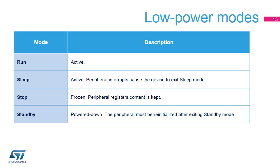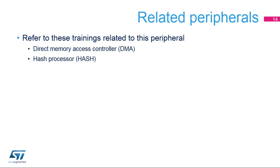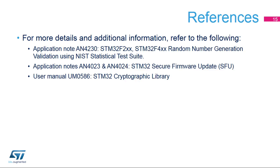Here is an overview of the status of the cryptographic processor in each of the low power modes. Cryptographic operations are not possible when the device is in stop and standby modes. This is a list of peripherals related to the cryptographic processor. Refer to the DMA training for more information about the cryptographic channel configuration, and please refer to the hash trainings if you want to go further on cryptographic engines. For more details, please refer to the documents available on our website. Thank you.